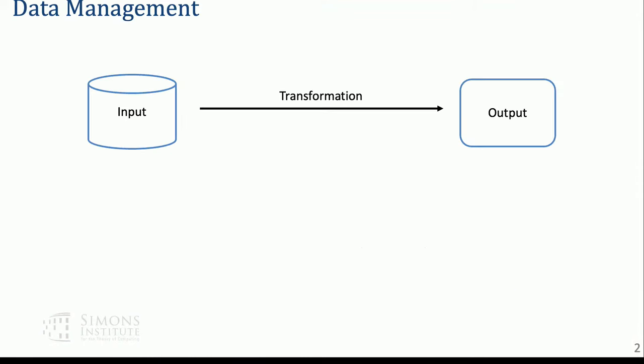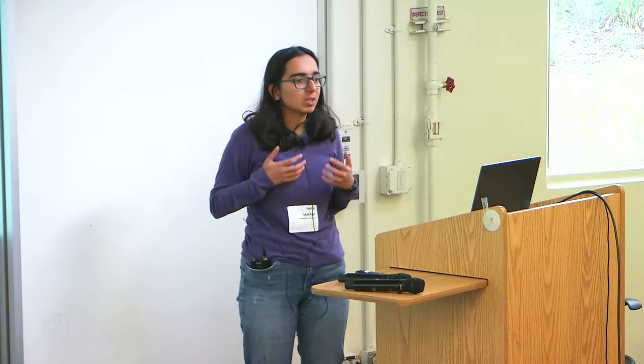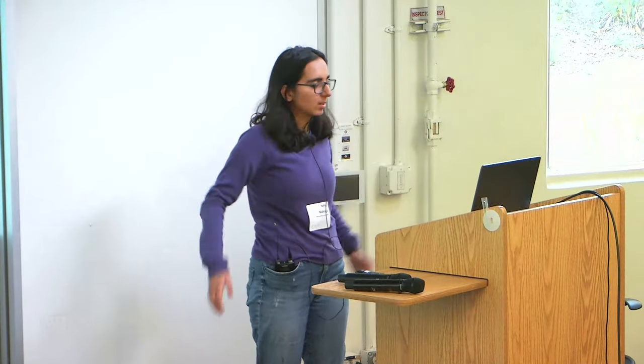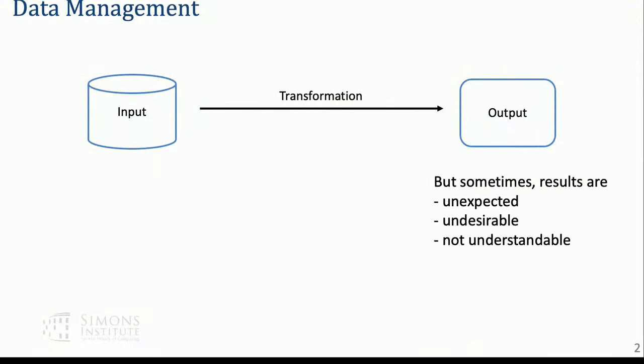We know data management and this simple process can get us a lot of good analysis. Depending on how complicated your input-transformation-output pipeline is, you can do powerful and useful things and extract information. But sometimes you do this whole process and you don't understand the output — something unexpected happened. What went wrong?